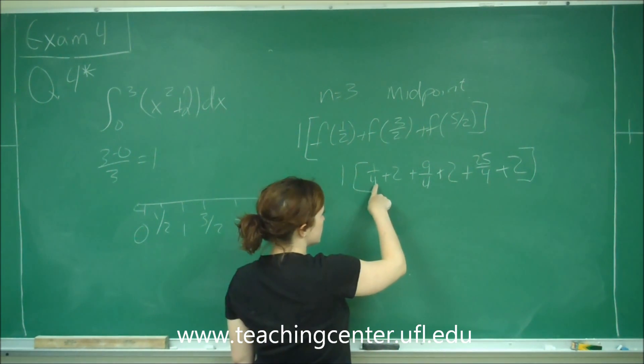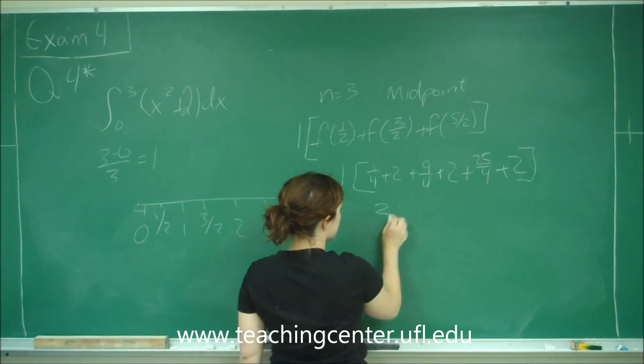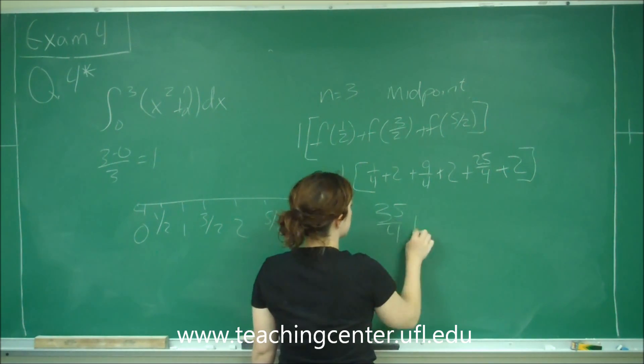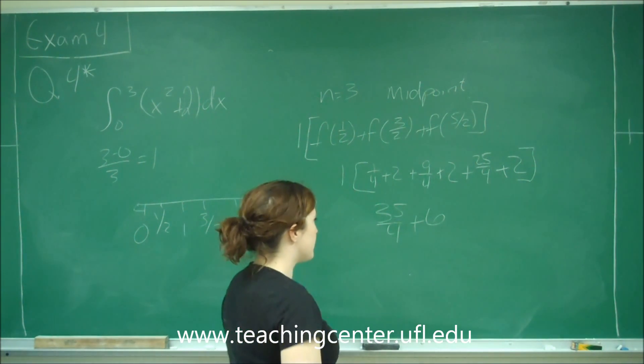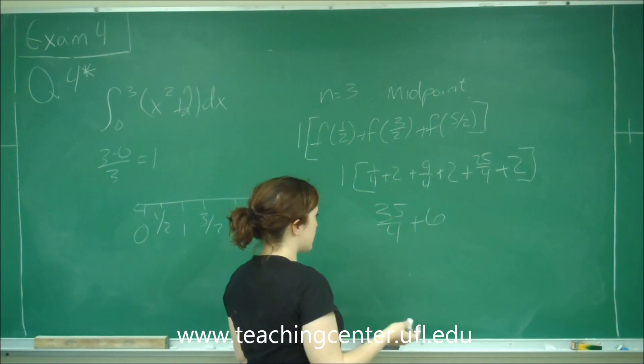And so we add up all our fourths, so it's thirty-five fourths plus six, and you can leave it like that, or you could also simplify it a little more if you wanted.